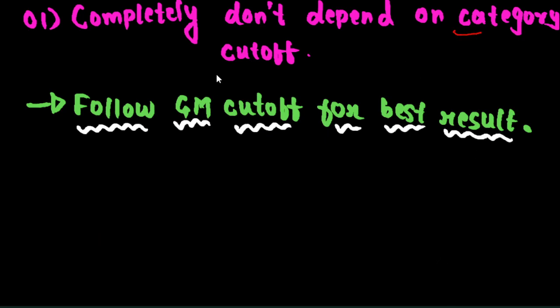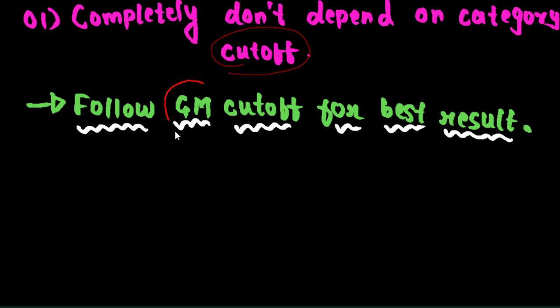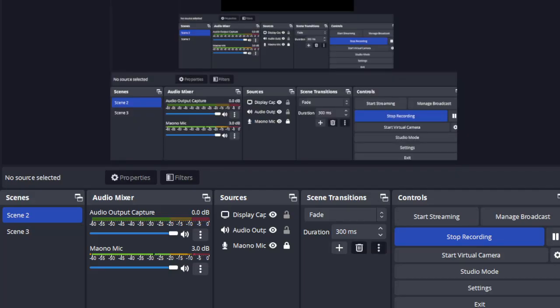The first and most important thing: completely do not depend upon category cutoff. What I mean is, do not follow category cutoff alone. Follow the general merit cutoff for the best result.